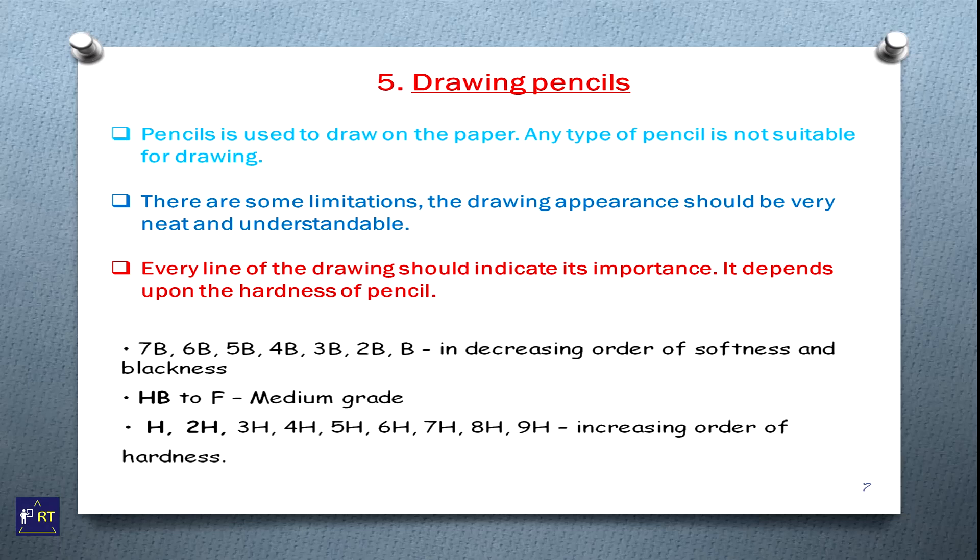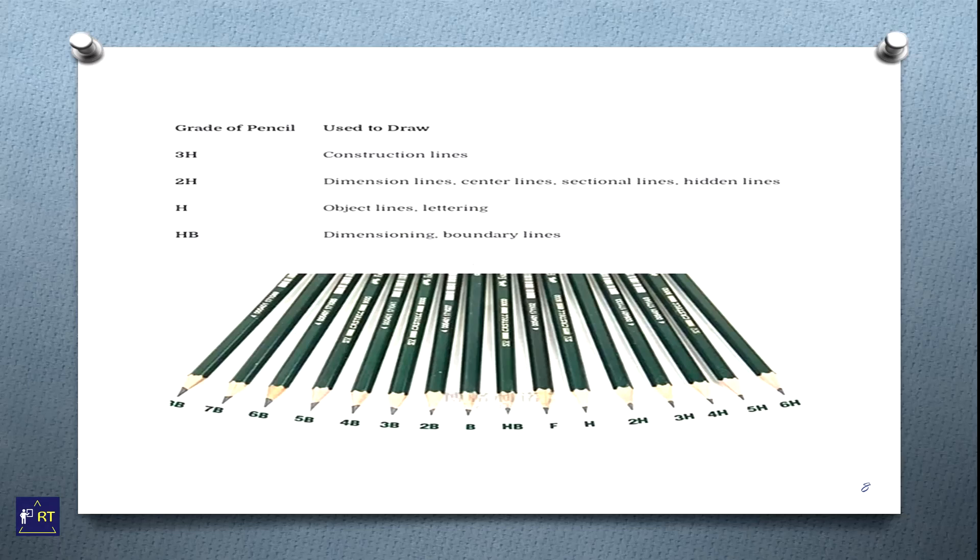7B, 6B, 5B, 4B, 3B, 2B, B is decreasing the order of softness and blackness. HB, 2F, medium grade, and H, 2H, 3H, dot dot 9H increase the order of hardness. This is the image of pencils showing different types of pencils.